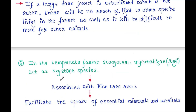In the temperate forest ecosystem, certain fungi called mycorrhiza act as keystone species. They are associated with pine tree roots and facilitate the uptake of essential minerals and nutrients. This is all about today's lecture.